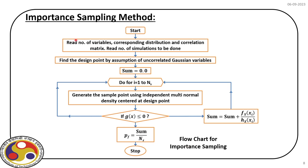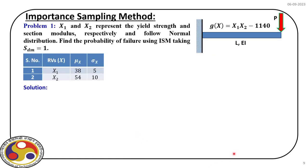We can also estimate the error using confidence interval analysis, computing the standard deviation to calculate the estimation error. The flowchart shows: start with random variables, uncorrelate them, go to standard normal space, start the iteration, generate samples from the multinormal density, check g(x) — if less than 0 it is a failure, estimate the weight and sum it up; once the complete loop is done for n_s samples, estimate p_f as sum divided by n_s.